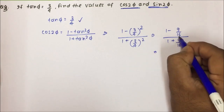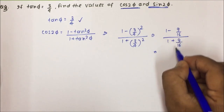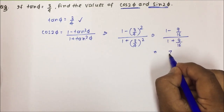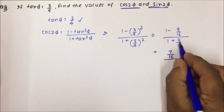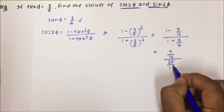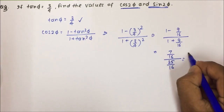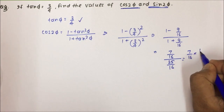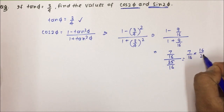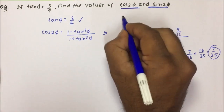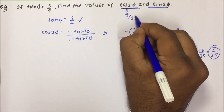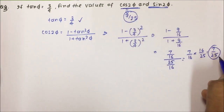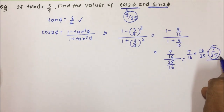Taking the LCM: (16 − 9)/16 divided by (16 + 9)/16, which is 7/16 divided by 25/16. This gives 7/16 × 16/25 = 7/25. So the value of cos 2φ is 7/25.